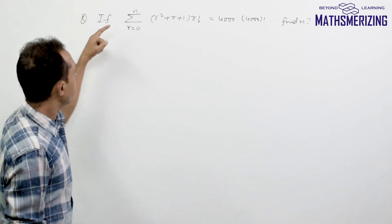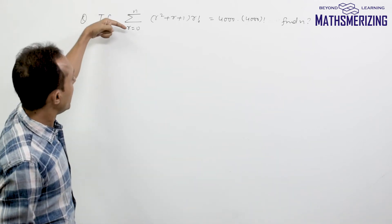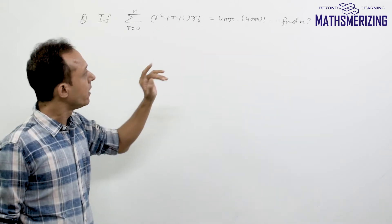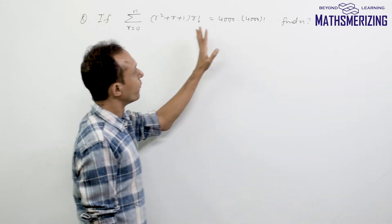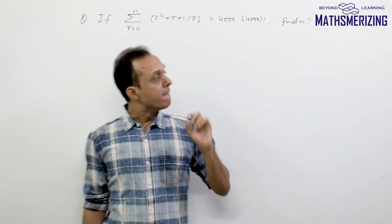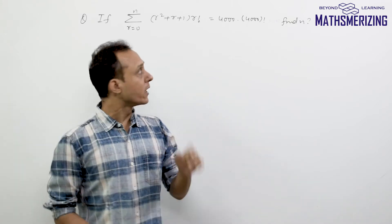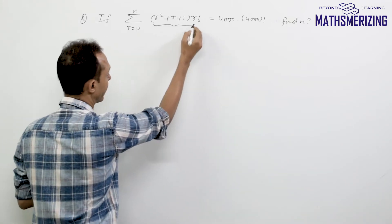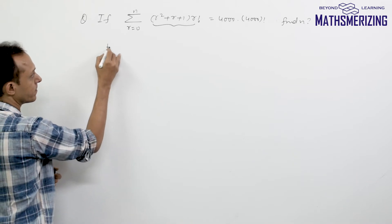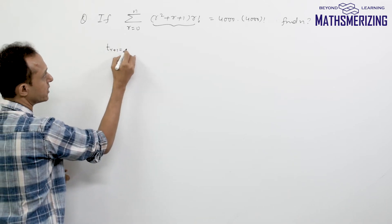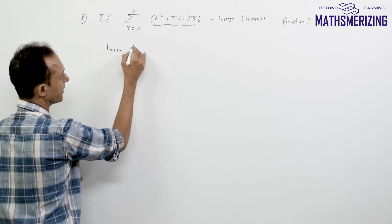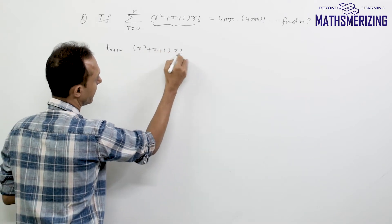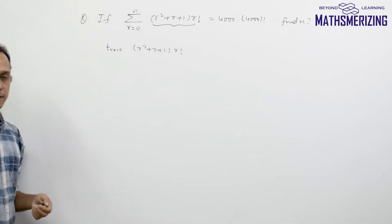So the question is: if the summation where r varies from 0 to n of (r² + r + 1) · r! equals 4000 · 4000!, find the value of n. What I'll do is write the general term — let this be the (r+1)th term — and this is (r² + r + 1) · r!.